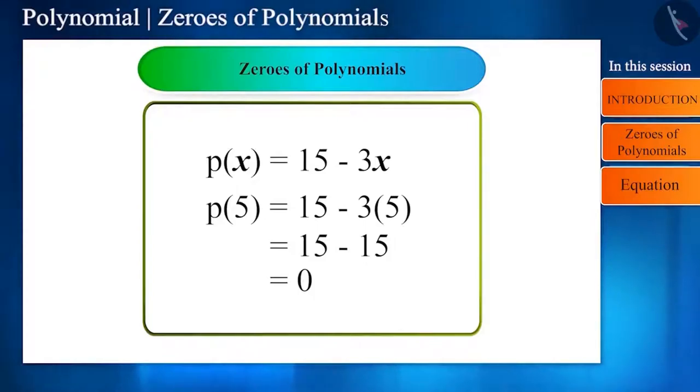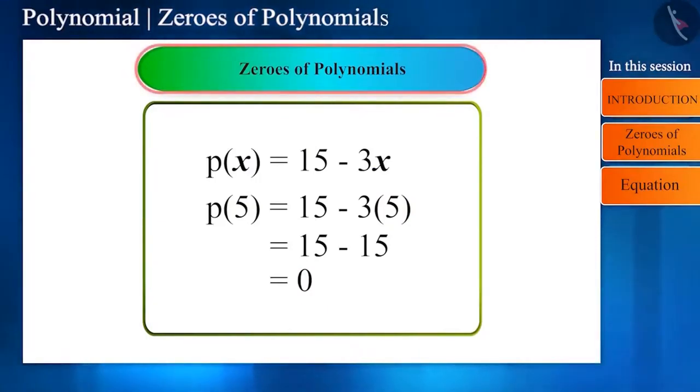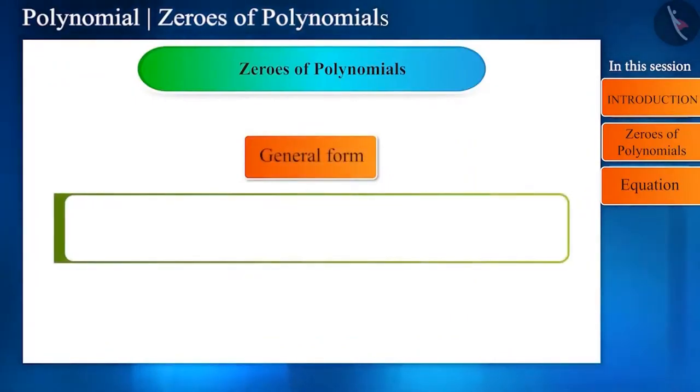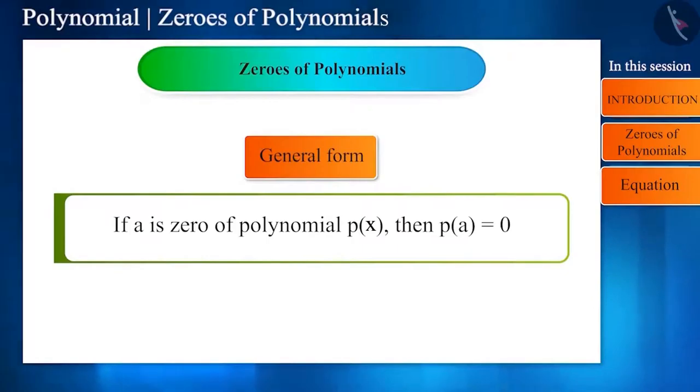Like we saw, when Rahul dropped 5 rupees, he did not get a single rupee. Therefore, we call such numbers as the zeros of polynomials. Speaking in simple form, the zero of the polynomial p(x) is the number a by which p(a) becomes 0, and this is our topic today.